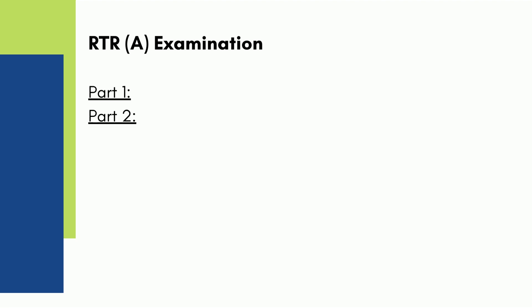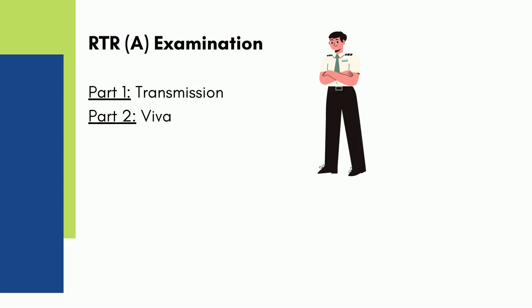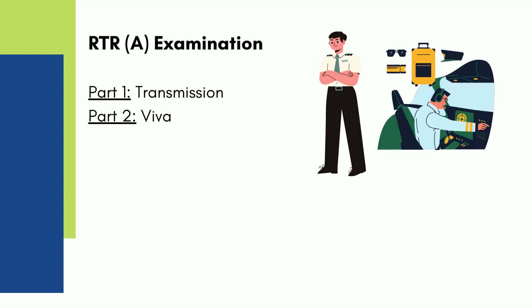The RTRA exam is conducted in two parts, known as Part 1 and Part 2. Part 1 is Transmission and Part 2 is Viva, which basically covers Regulation and RT Procedures. This RT license is a must for pilots and AME, especially B2 engineers.